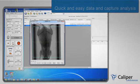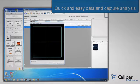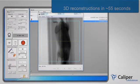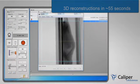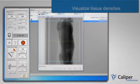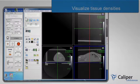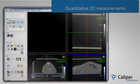Data capture and analysis is quick and easy. With 3D reconstructions in about 55 seconds after scan completion, basic analysis tools allow you to visualize tissue densities and make quantitative 2D measurements.